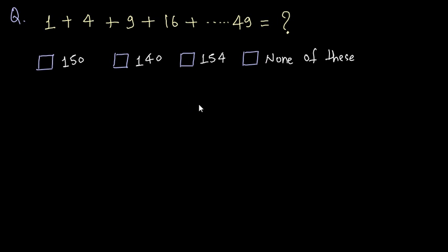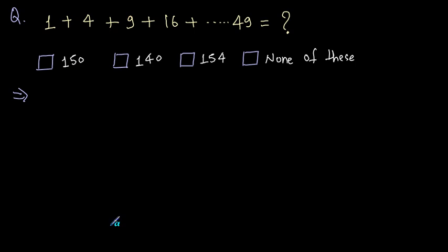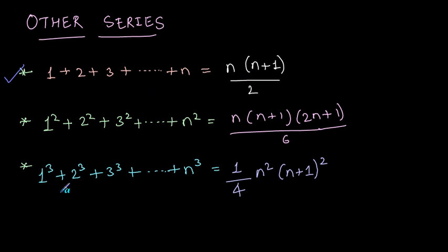Now we have another question. To solve this question we need to find out how we can convert this to match one of these three formulas. If you observe carefully, this can be written as 1+4 is 2², 9 is 3², so plus 3²+4² till we have 49 which is 7².